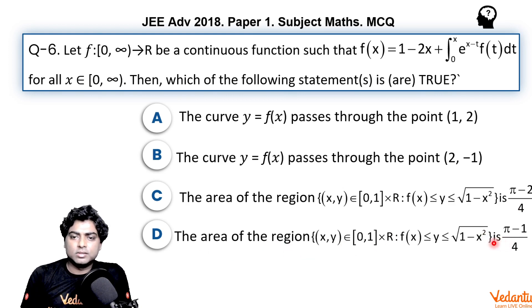In option D, same area is given as (π - 1)/4. So let's see how we can find first f(x), then we will see which option is correct.